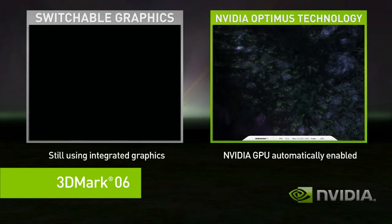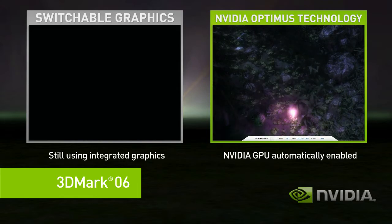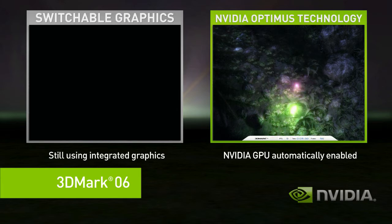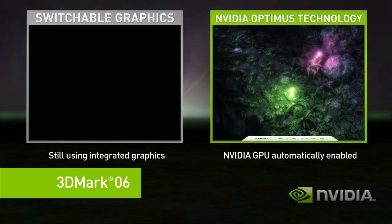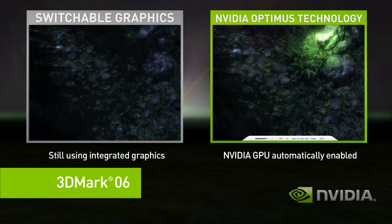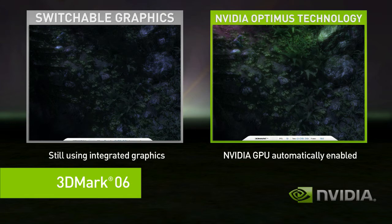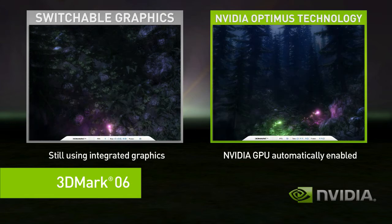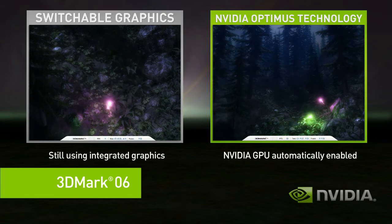Optimus, on the right-hand side, when it starts a complex application, it automatically uses the discrete GPU. The performance difference between the two is easy to see.